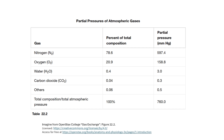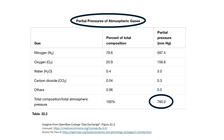What we do with our understanding of air pressure is use it to figure out individual gases' partial pressures. A partial pressure is a specific gas's partial contribution to the total air pressure. So in our atmosphere at sea level, the total air pressure is 760 millimeters of mercury.